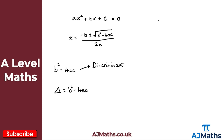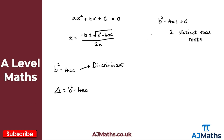We have three cases. The first case: if b squared minus 4ac is greater than zero, we have two distinct real roots. Graphically, the quadratic cuts through the x-axis twice — we have a root here and a root here.